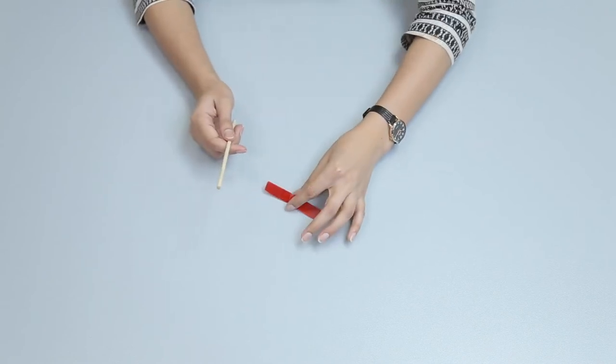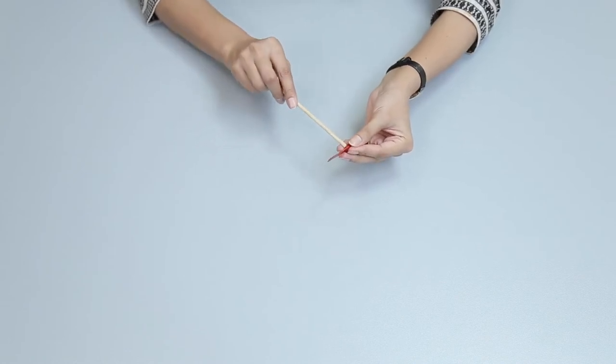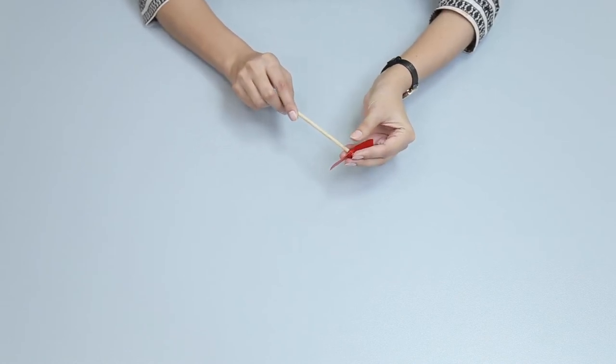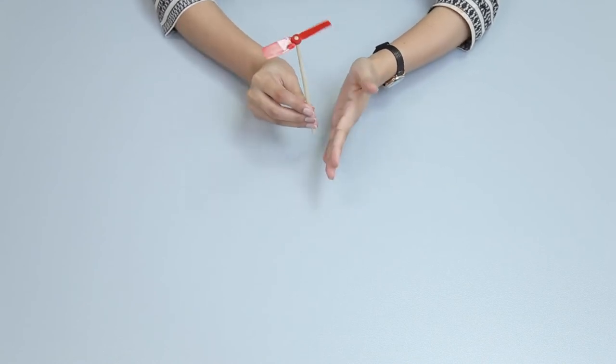Carefully insert one end of the wooden rod in the small hole of the propeller. Your propeller is ready to fly in the air.